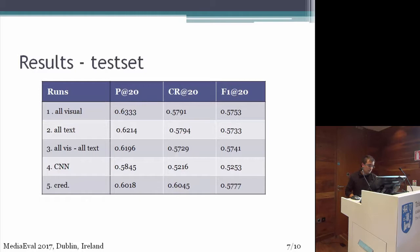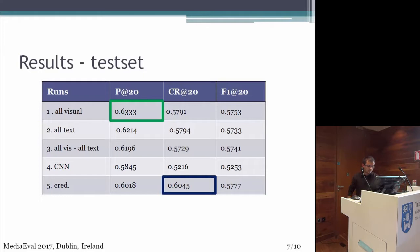The combination selected previously was applied on DevSet and we obtained this result. The best precision was achieved by using visual descriptors at 0.63. The best cluster recall was achieved by using credibility descriptors, and this yielded also the best F1 metric score. What we noticed is that credibility descriptors didn't perform very well on DevSet, but on TestSet we achieved the best results.